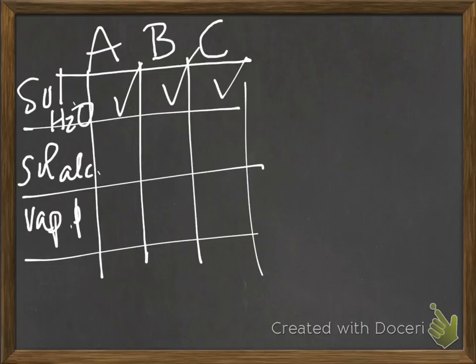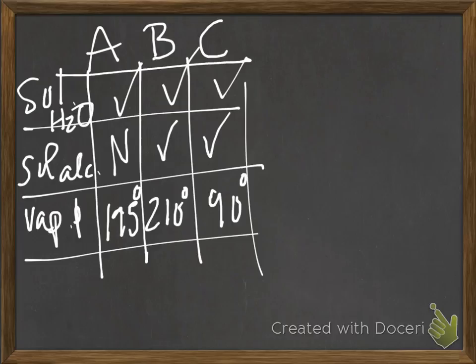They are all soluble in water. Oof. There goes one plan for separating them. We can't dissolve them in water and filter one of them out. Except A is not soluble in alcohol. Actually, I'll fill out the characteristics. There are our characteristics.